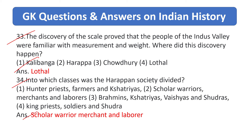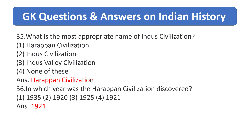Into which classes was the Harappan society divided? Answer is scholar, warrior, merchant, and laborer. What is the most appropriate name of the Indus civilization? Answer is Harappan civilization. In which year was the Harappan civilization discovered? Answer is 1921.